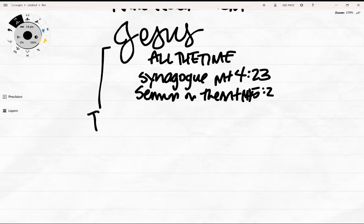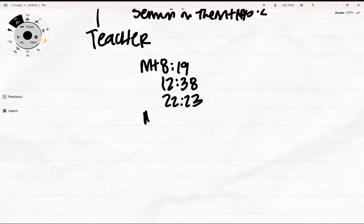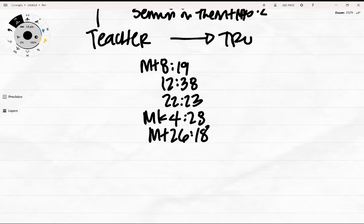There are so many places in the Gospels where He is known and addressed as Teacher. By the teachers of the law, Matthew 8:19. By the Pharisees, Matthew 12:38. By the Sadducees, Matthew 22:23. By His disciples, Mark 4:28. And by Jesus Himself, Matthew 26:18. That's why He came.